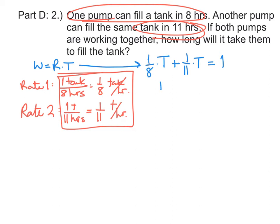We can look at this as a rational function as t over 8 plus t over 11 is equal to 1. So we have two fractions that need to be added together.